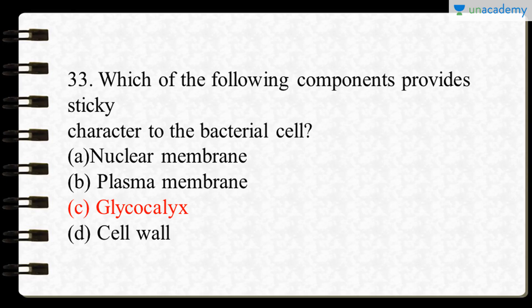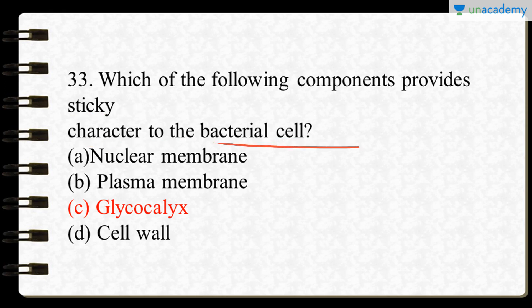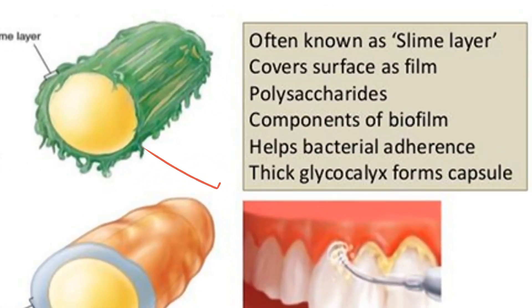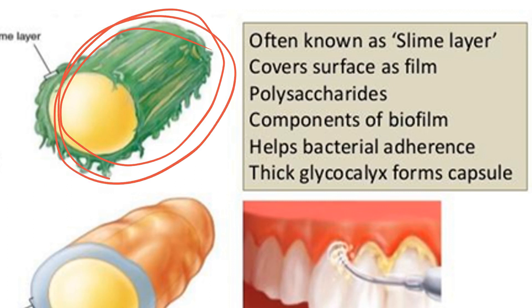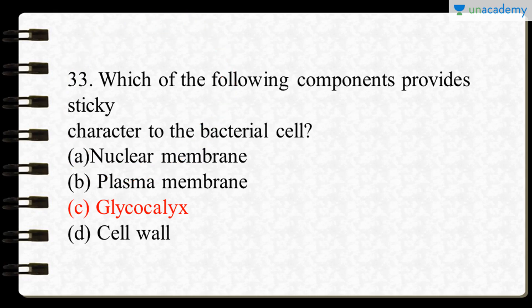The next question asks which component provides the sticky character to bacterial cells. If you want a detailed view of cell components, you can refer to my previous course on cell and cellular organelles. The glycocalyx, also known as the slime layer, provides bacteria the capacity to adhere to a site in the host. Option C is the most correct answer.